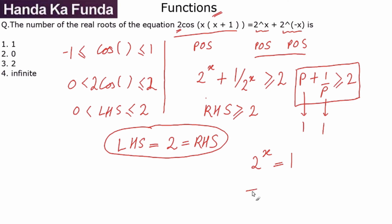Which means 2^x has to be 1, which means x has to be 0, and this is the only possible way where x can be 0 and 2^x can be 1. Which means the only possible solution for this particular equation is x = 0.